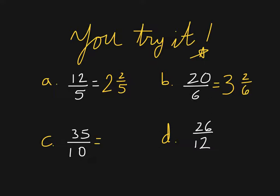For C, it would take 3 groups of 10/10, and that would get me 30/10 and then I would need 5/10 more. And finally for 26/12, I would need 2 groups of 12/12 and 2/12 more to get to 26/12.